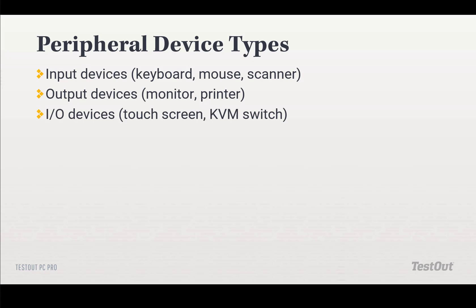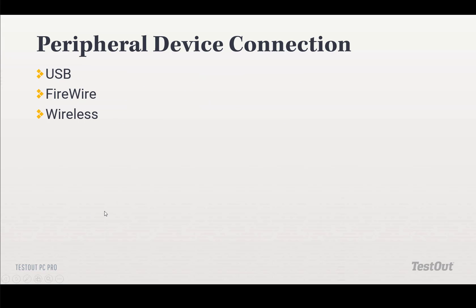Our third category combines both input and output devices. For example, a touch screen is going to be a combination of input and output — think about the screen on your phone, it's in and out. And then we also have our KVM switch, which allows multiple computers to share one keyboard and monitor.